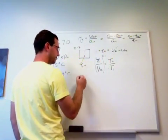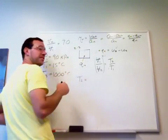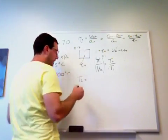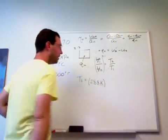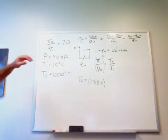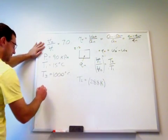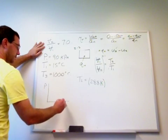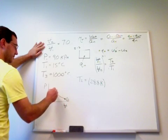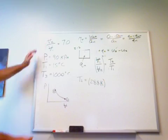We're interested in solving for T2. So T2 is T1, 15 degrees, that's 288 Kelvin. V1 over V2. So let's be careful which way we do that. So V1 is the large one, V2 is the small one. So this is actually backwards. So V1 is larger than V2.